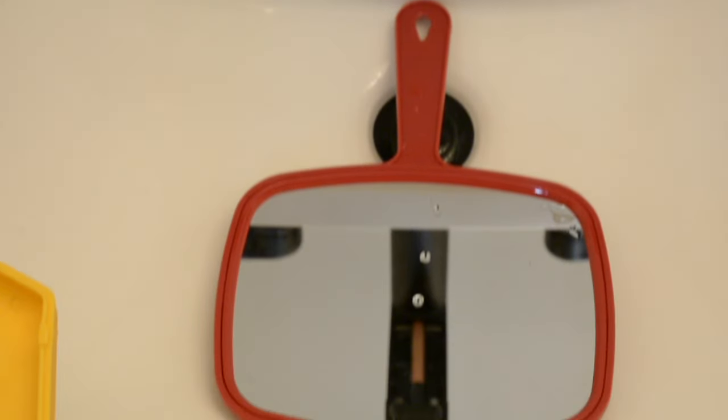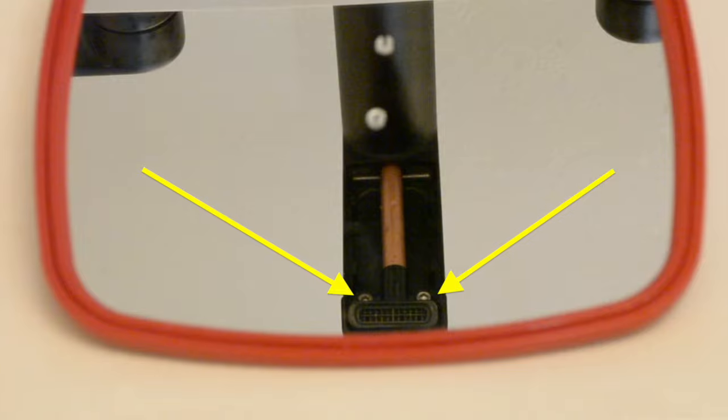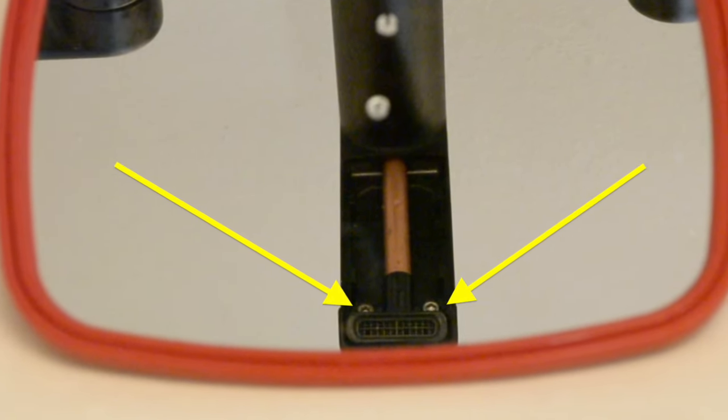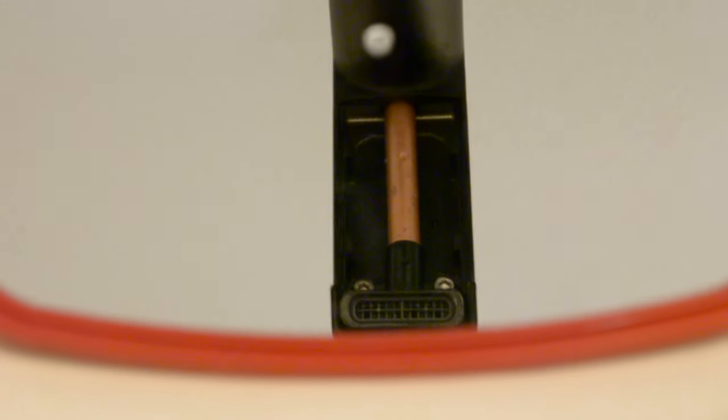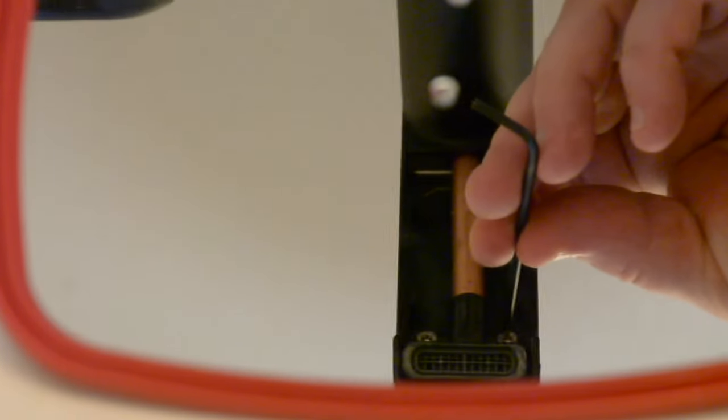Then you should be able to see the two screws right there, the two hex screws. So right there and right there. What you do is you just take your 7/64 and you kind of use the mirror as a guide.